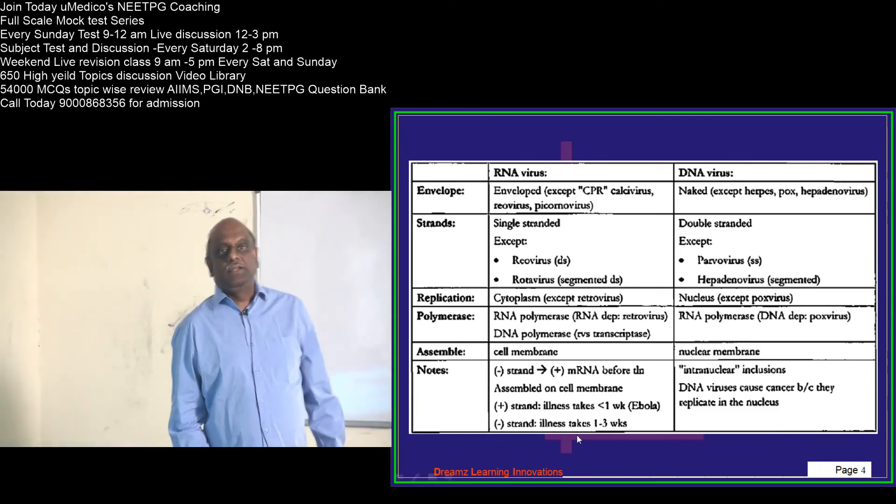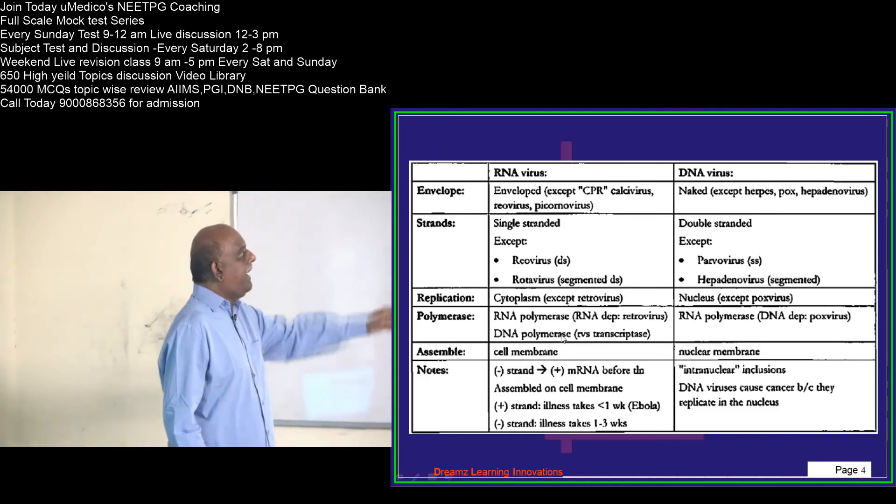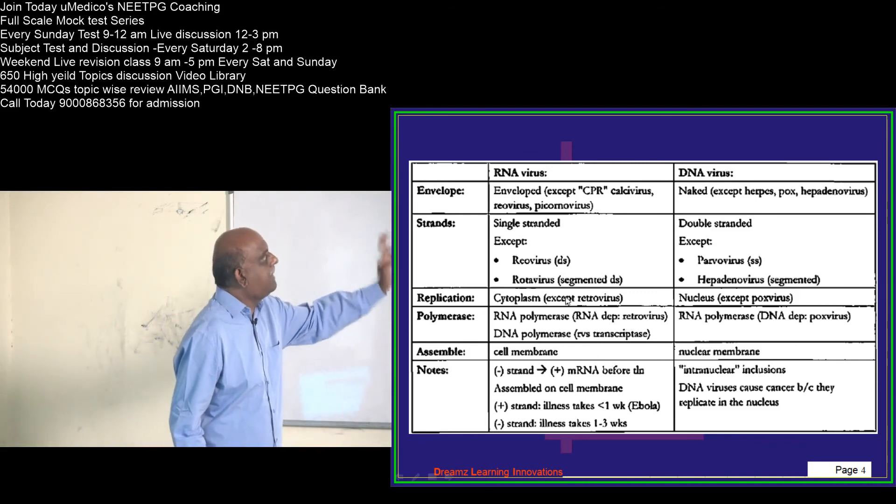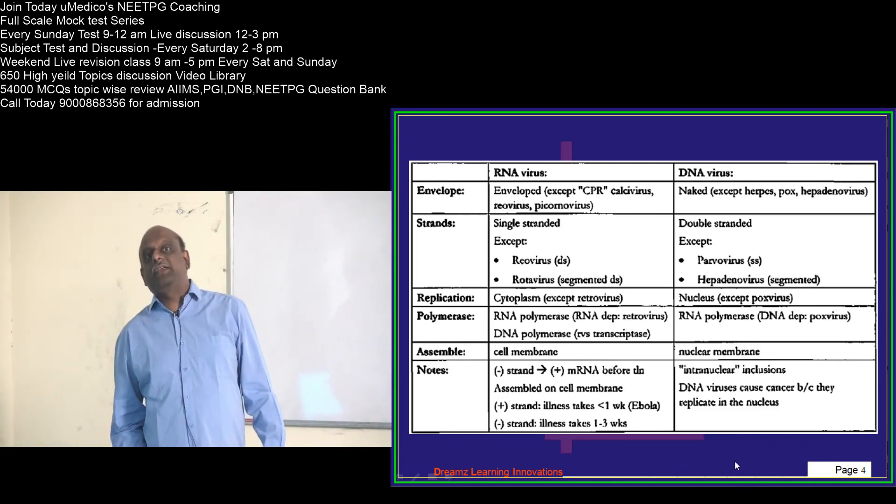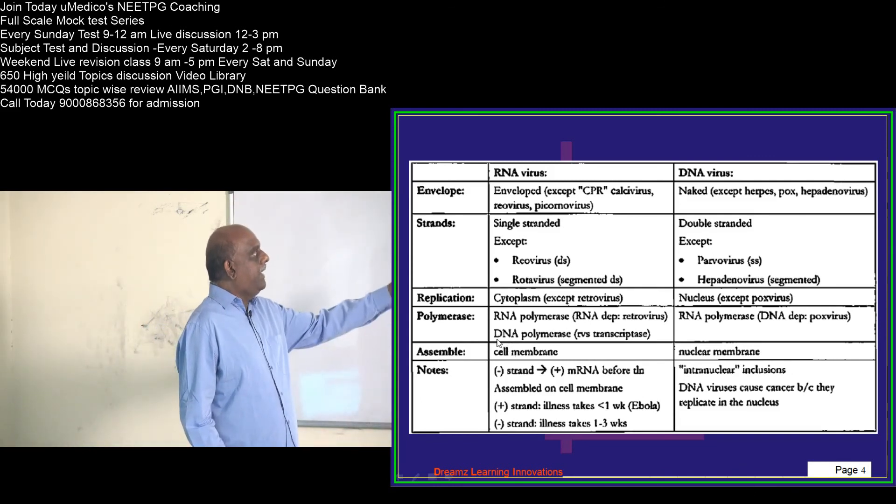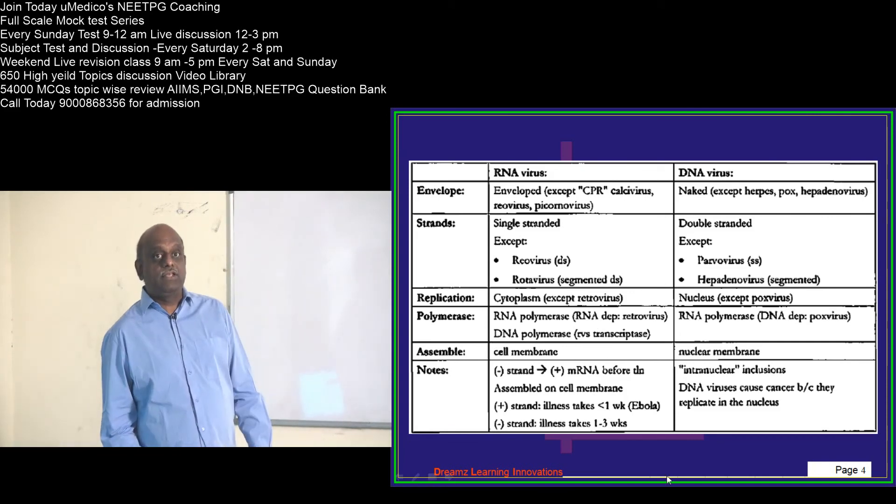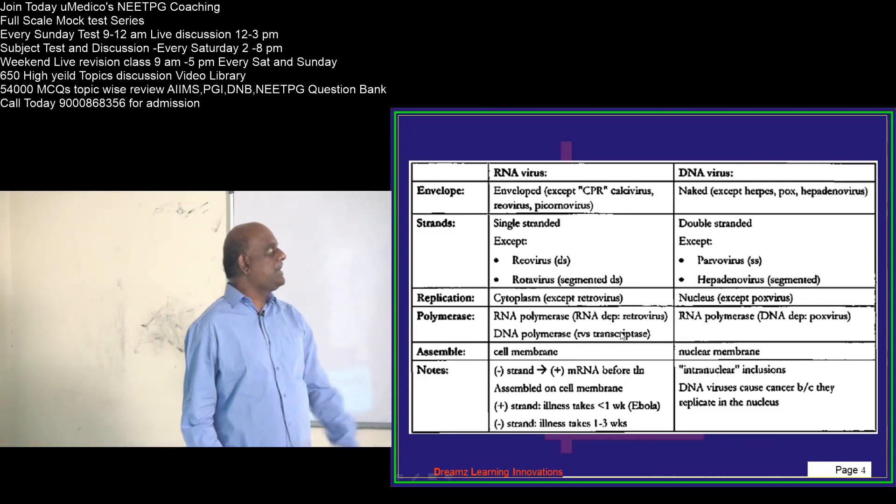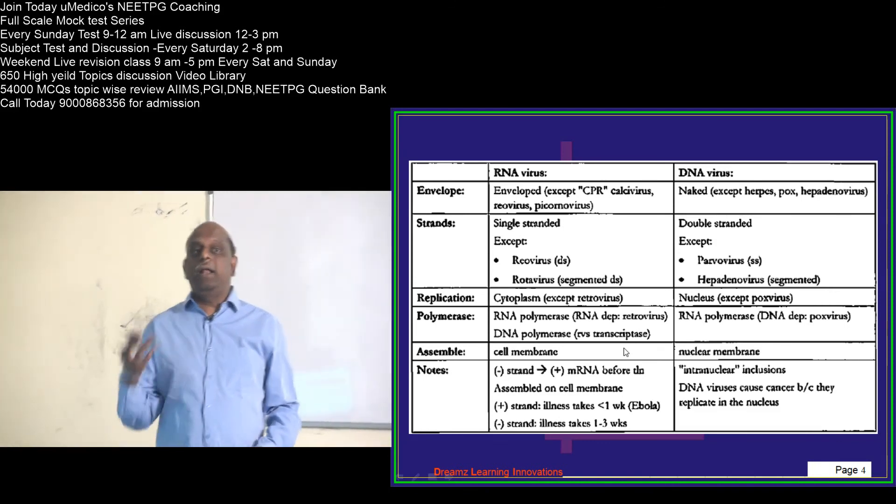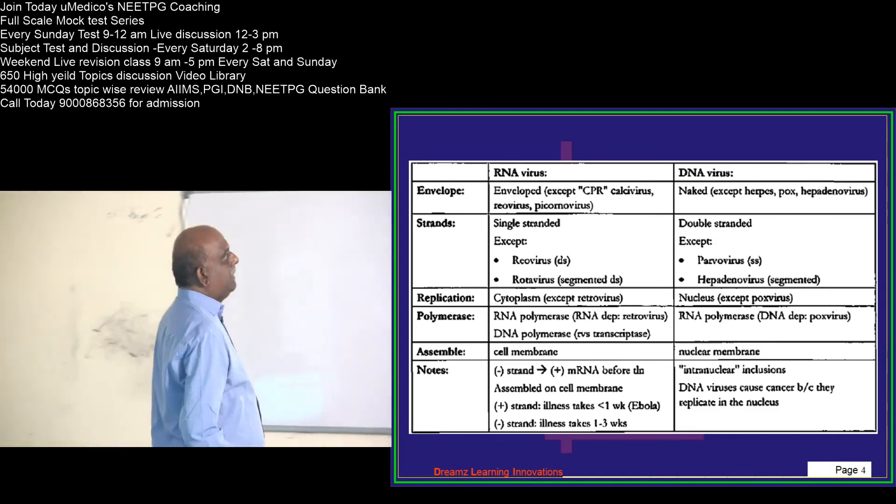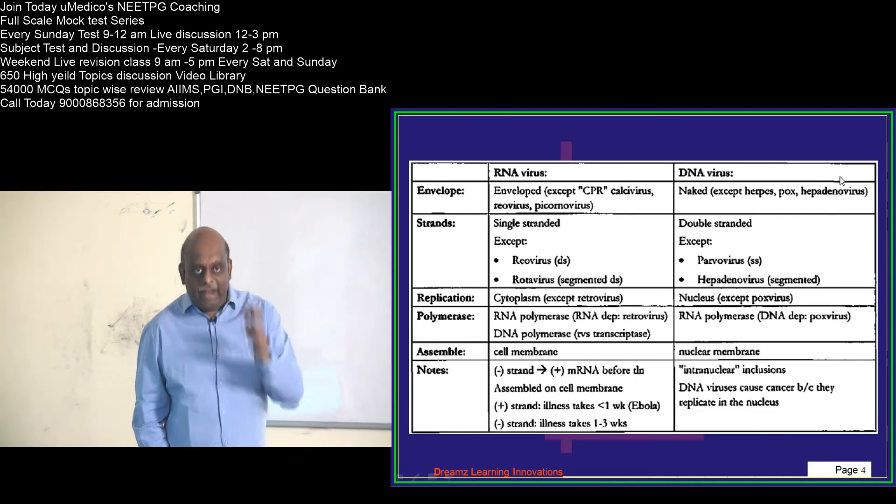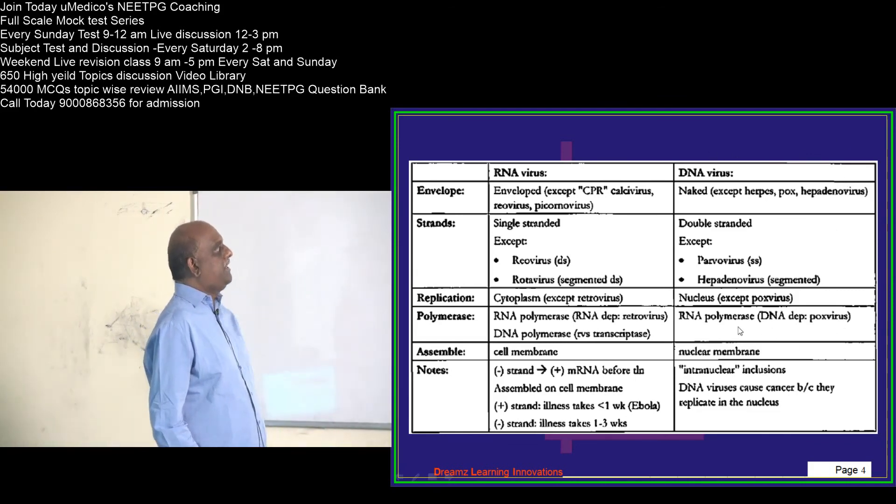Let's talk about the polymerase. RNA polymerase is the one which you see in RNA viruses, but that is RNA-dependent RNA polymerase in the case of retrovirus. Then you will also find DNA polymerase, even though it's an RNA virus. That is the reverse transcriptase of the retrovirus. DNA virus - the only one which has got DNA-dependent RNA polymerase is the poxyvirus.